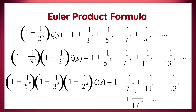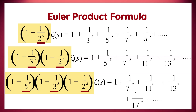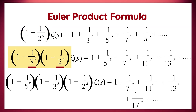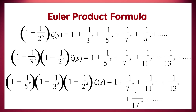If I summarize the entire iterative process, we see that every time we include a prime number on the left-hand side, the elements having multiples of that prime number are removed from the right-hand side. In the first step, multiples of 2 are removed; in the second, multiples of 2 and 3; in the third, multiples of 2, 3, and 5. This iterative process sieves the right-hand sides cumulatively, multiplying elements of the form 1 minus 1 over p to the power minus s, where p is prime.